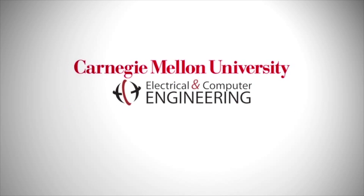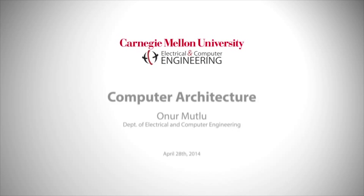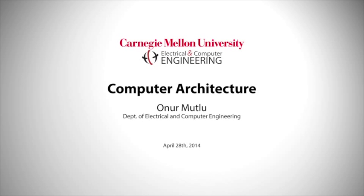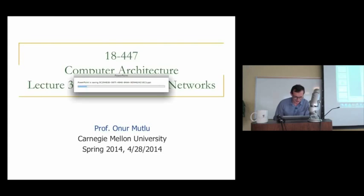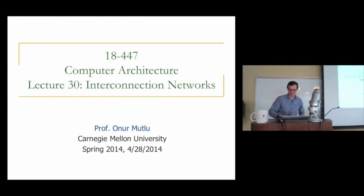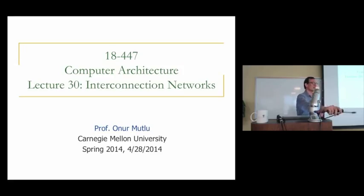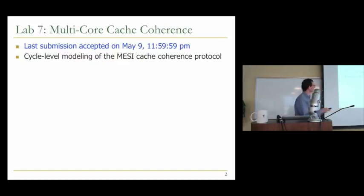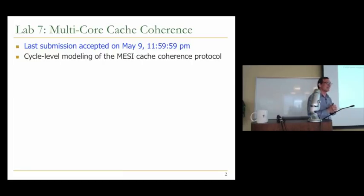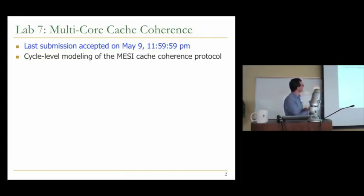Okay, I think now we can get started. So we'll talk about interconnection networks today. I wish I had a lab for you to do on interconnection networks, but maybe when you take 742 you'll do it. A reminder: we have one more lab, hopefully the most exciting lab. It's on cache coherence and multi-core systems. You'll be implementing the Mezi cache coherence protocol, and hopefully some of you have started.